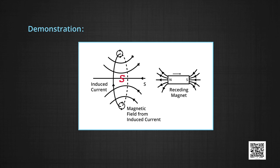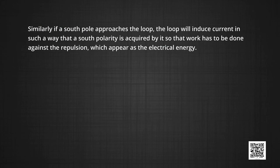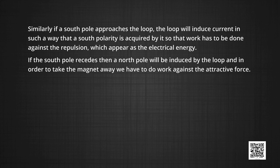Similarly, if a north pole is moved away from the loop, as the magnetic flux towards the right decreases, the induced current will be in the clockwise direction according to the right-hand rule, and a south pole will be induced. The loop will try to oppose the cause — the receding flux — and will induce current so as to increase the flux. If a south pole approaches the loop, the loop will induce a current such that a south polarity is acquired by it, so that work has to be done against the repulsion. If the south pole recedes, a north pole will be induced by the loop and work must be done against the attractive force.